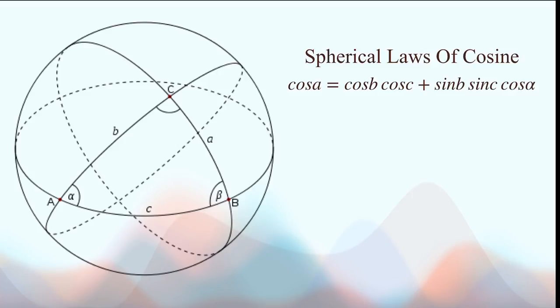For example, if we want to find the side A, we can take the arc cos of both sides, and then we would have to multiply cos B by cos C, and then add it to the other quantity.